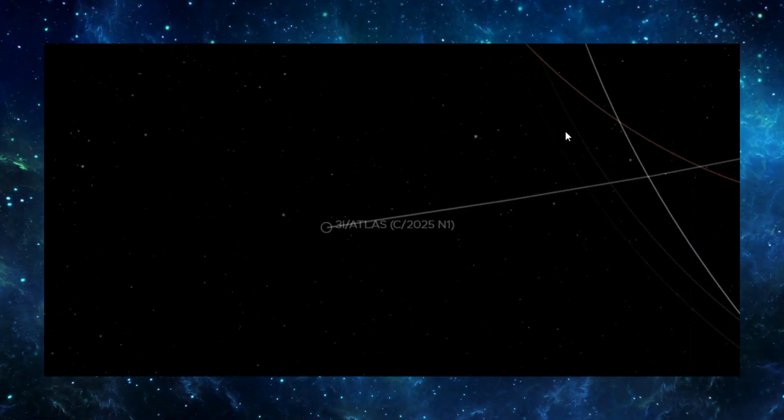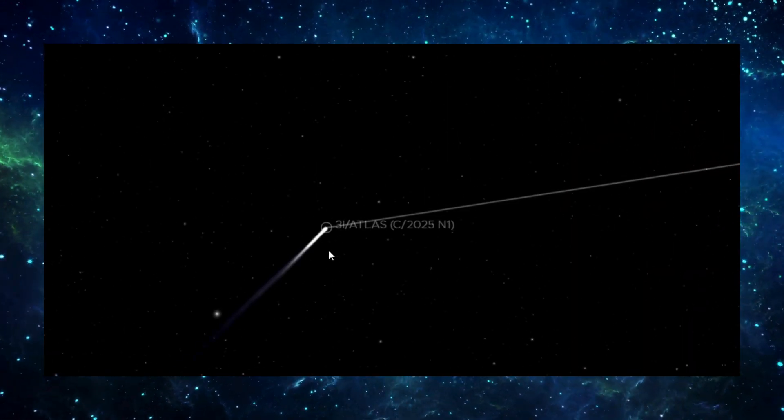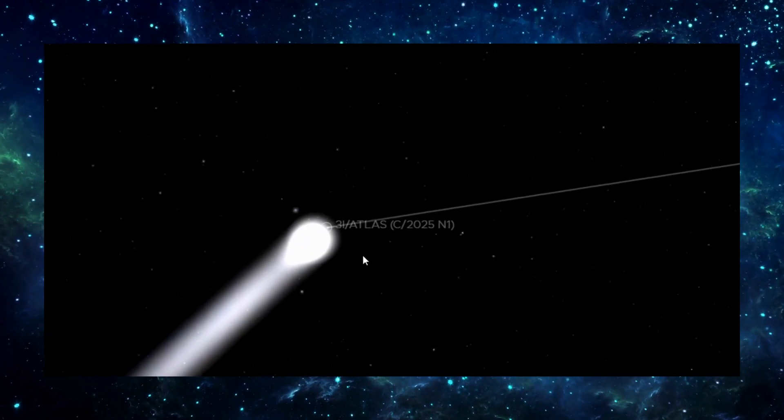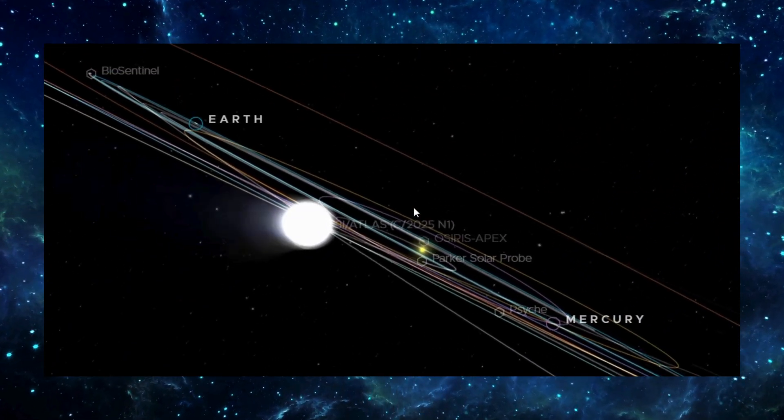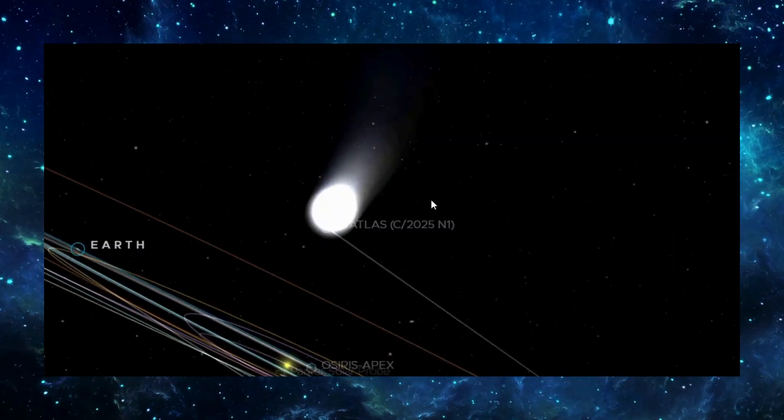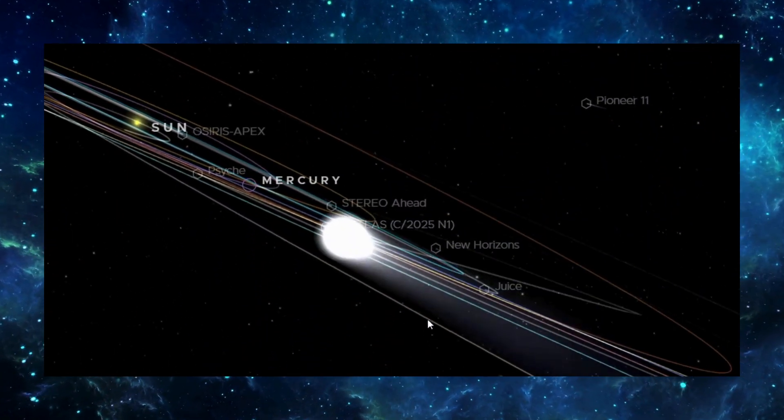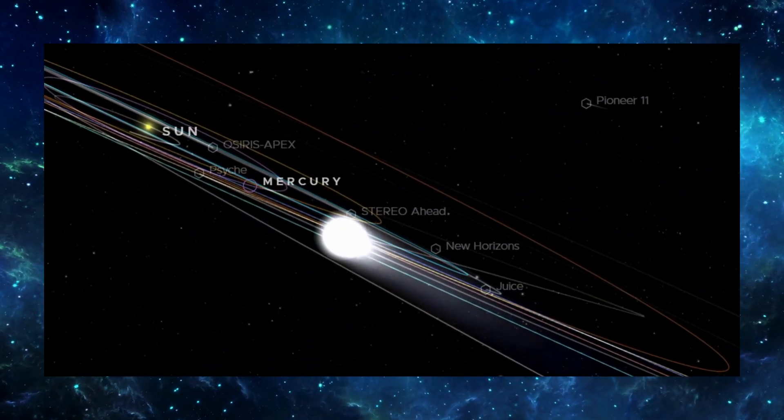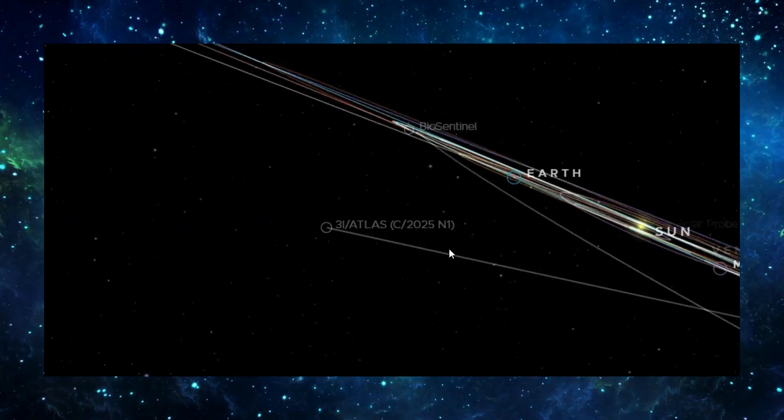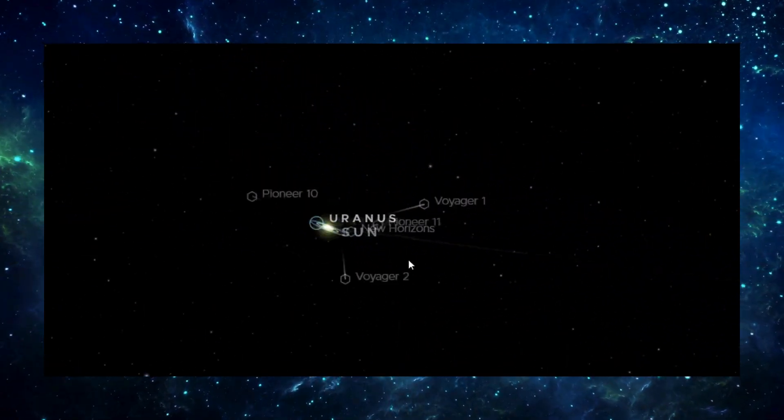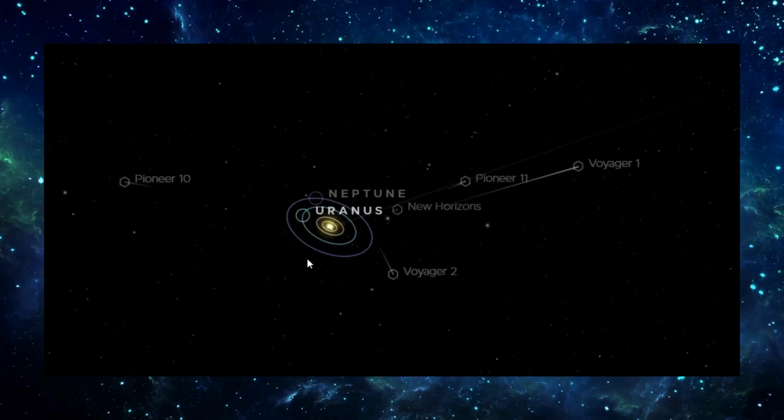The direction of the jets depends on internal structure, rotation, sunlight, and dozens of unpredictable variables. Yet 3i Atlas received a course correction of exactly 62,000 miles, in exactly the direction needed, to hit a target only 0.1% wide, on the first attempt. The odds of random outgassing doing that? Practically zero.